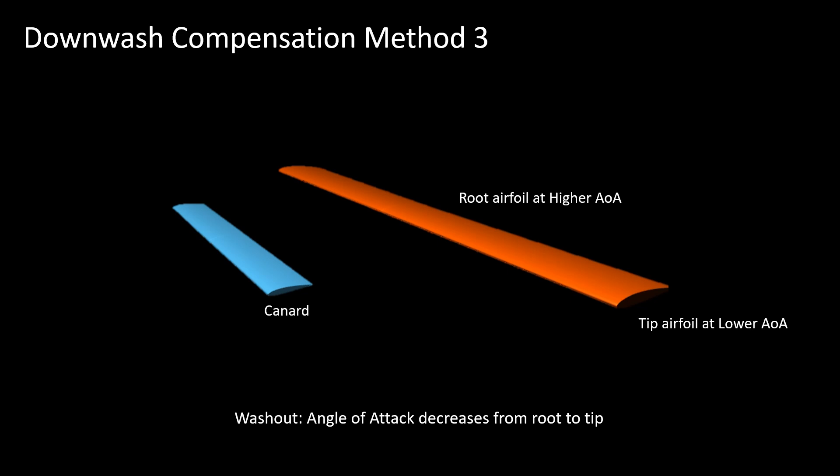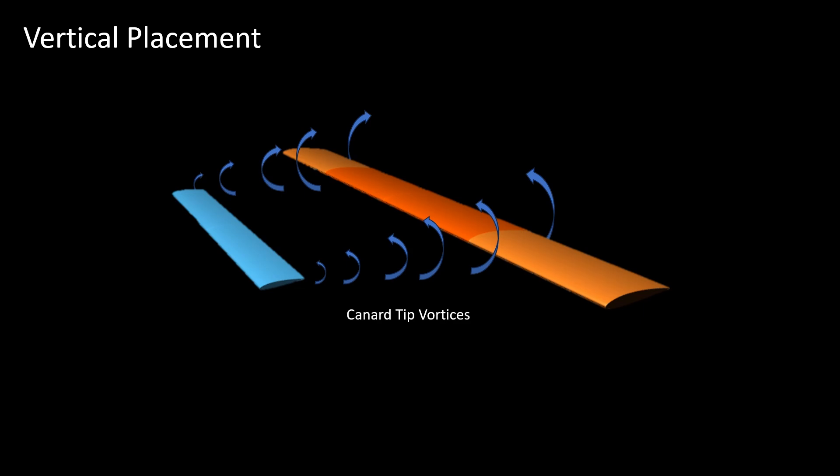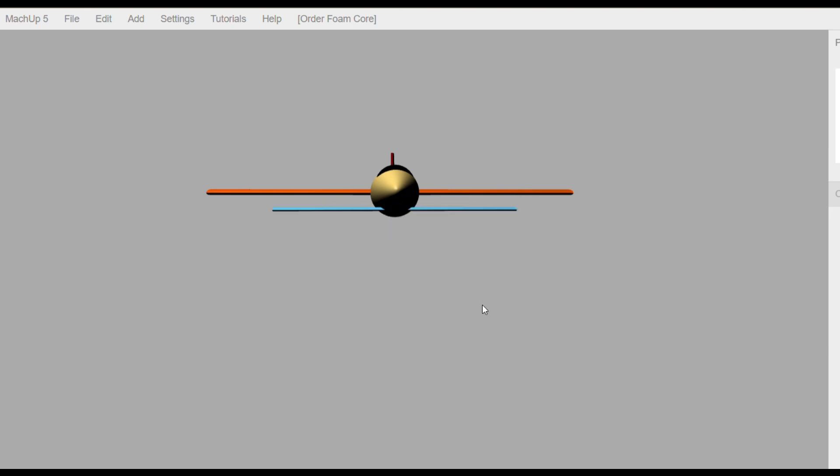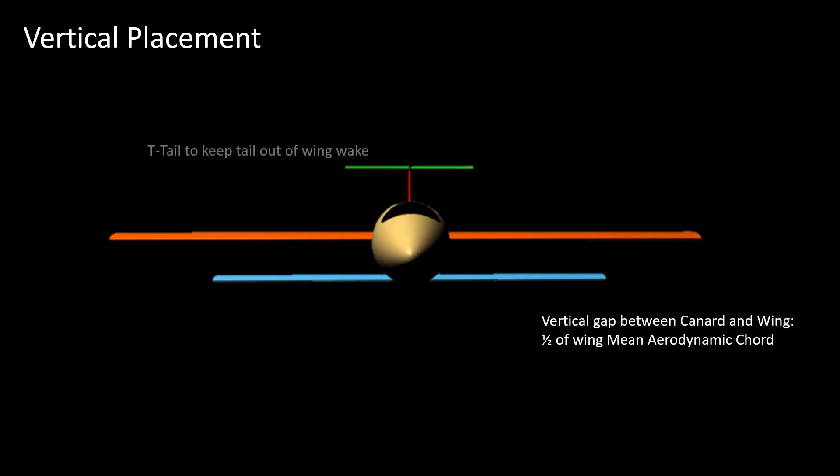To avoid the wingtip vortices of the canard interacting with the main wing, a vertical gap between them of half of the mean chord of the wing is suggested. It is also suggested that the T-tail configuration be used for this design to place the tail out of the wake and increase its effectiveness.